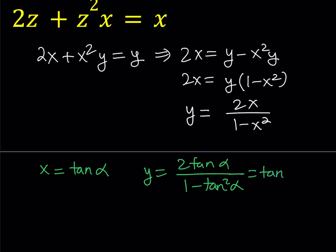How do you know that x is equal to tangent alpha? Well, since x can range anywhere between negative infinity and infinity except for the two values plus or minus 1, and tangent can be pretty much anything, we can safely let x equal tangent alpha. And from here we get a really nice result.